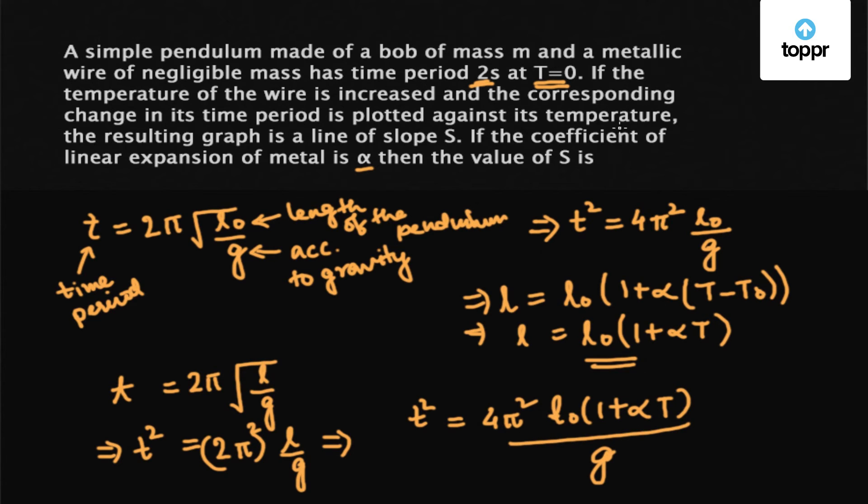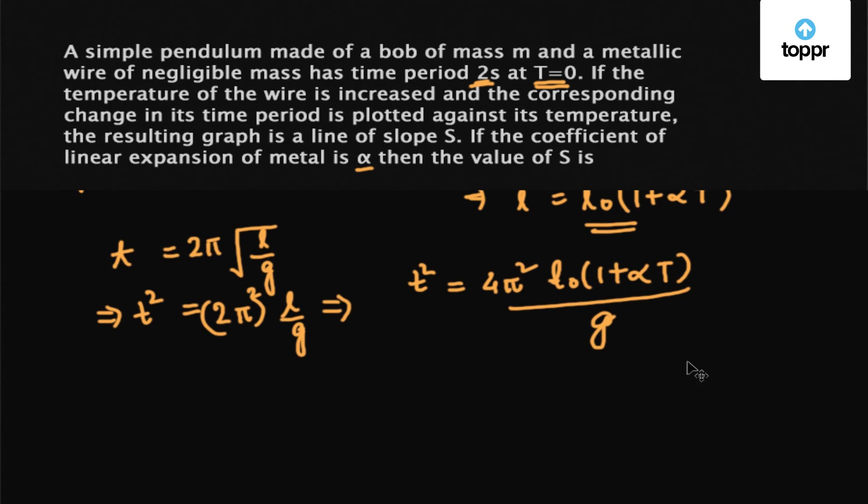Now it is asked to find the slope of the line when a graph of time period versus temperature is plotted. To find that, we have to differentiate this equation such that on the left hand side we get dt/dT, which is nothing but the slope S. So we differentiate this equation to get dt/dT = 4π²L₀α/g.